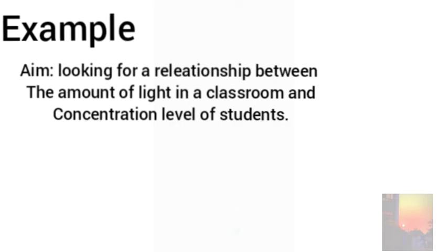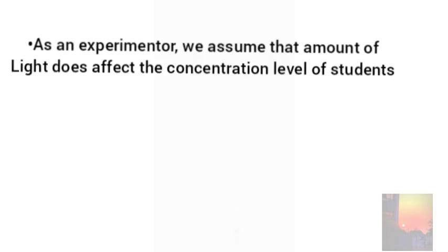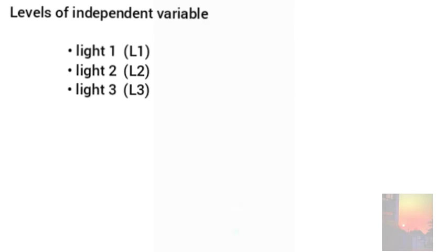To give you guys a proper understanding, let me give you an example. Let us create a scenario in which you as an experimenter are looking for a cause and effect relationship between how amount of light in a classroom can affect the concentration level of students. As an experimenter, we assume that the amount of light does have an effect on the concentration level of students. To figure this out, we put three different levels of independent variables as light 1, light 2, and light 3.